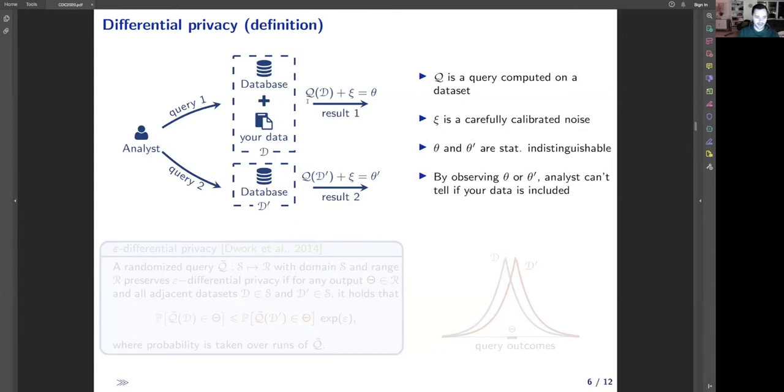Its goal is to make sure that any computation on a database doesn't disclose its private attributes. For example, consider an analysis that computes a function Q over dataset D and D prime. The first one contains your personal data and the other one does not. To make sure that an adversary cannot infer whether your personal data is included in this analysis, differential privacy requires augmenting the noise to its computation to make the result of computation statistically similar on different databases.